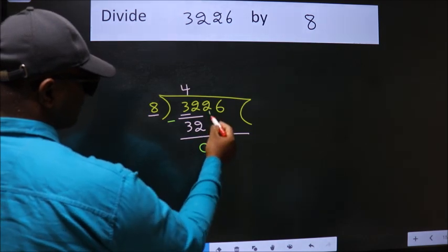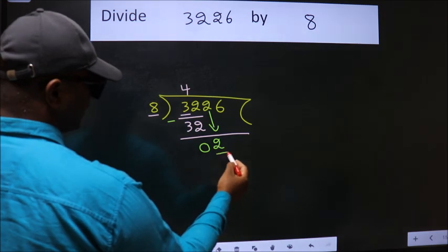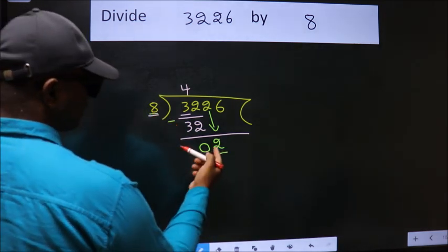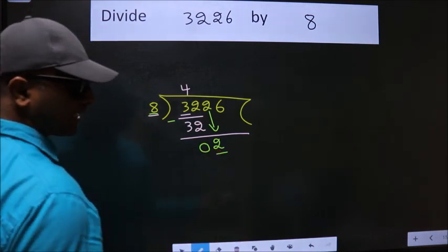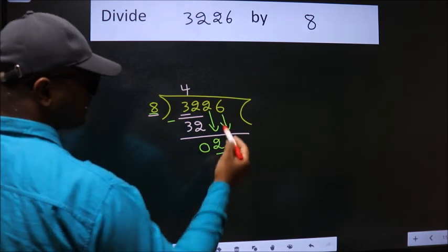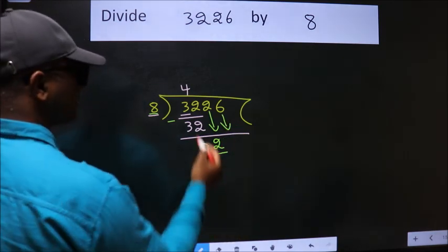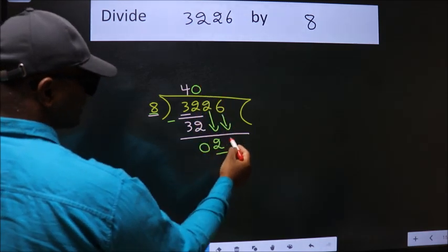After this, bring down the beside number. So, 2 down. Here we have 2. Here 8. 2 is smaller than 8. So we should bring down the second number. And the rule to bring down second number is put 0 here. Then only we can bring down this number.